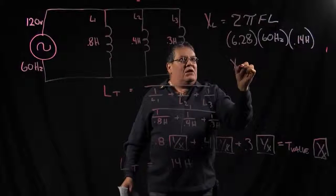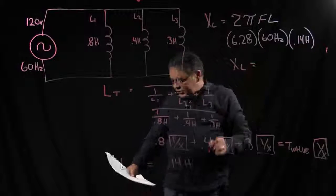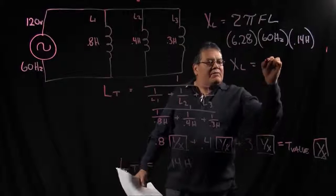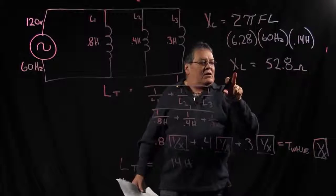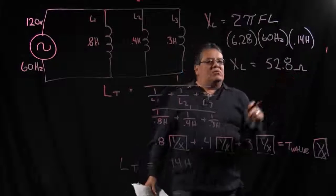So in this situation, our XL is equal to 52.8 ohms. Again, reactance is always measured in ohms.